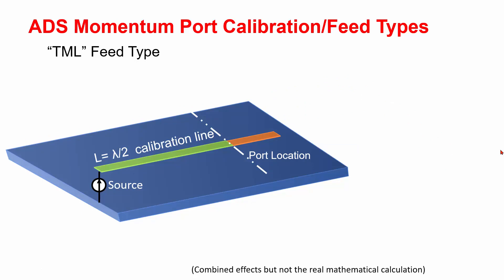TML calibration is developed to accommodate both of these effects. Let's see how this works. The original line is our design line, and the green line is the virtual calibration line with the same characteristic impedance as orange line, and it is attached at the port.